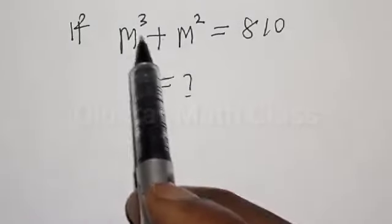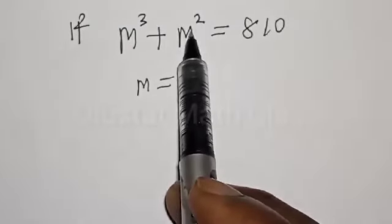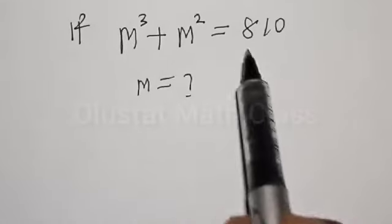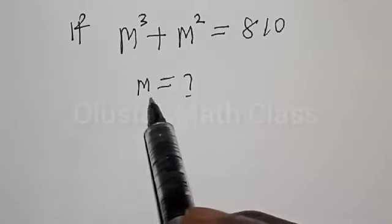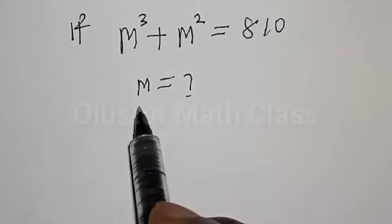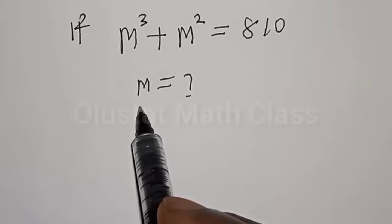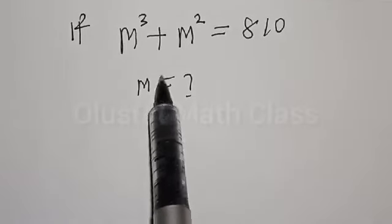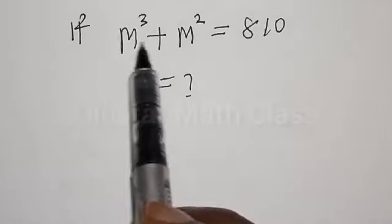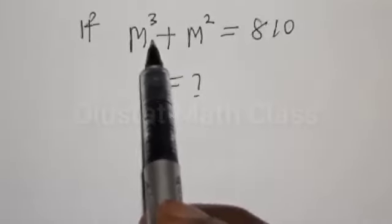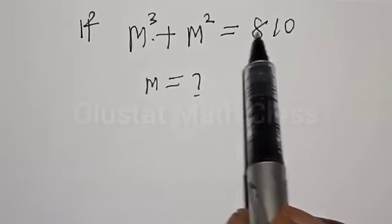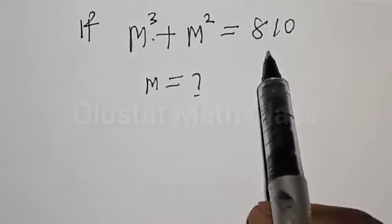If M³ plus M² is equal to 810, what is the value of M? Welcome to my class. In today's class, we want to look at how we can quickly find the value of M from this given equation: M³ plus M² is equal to 810.